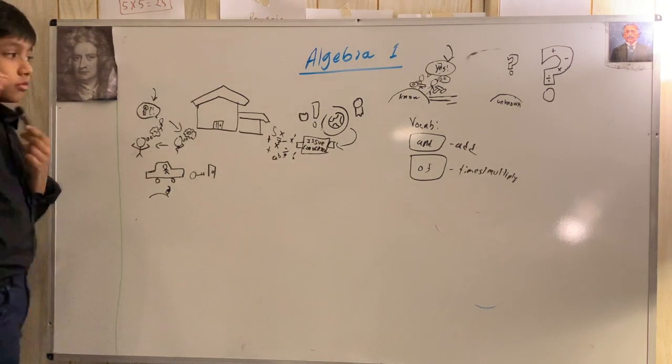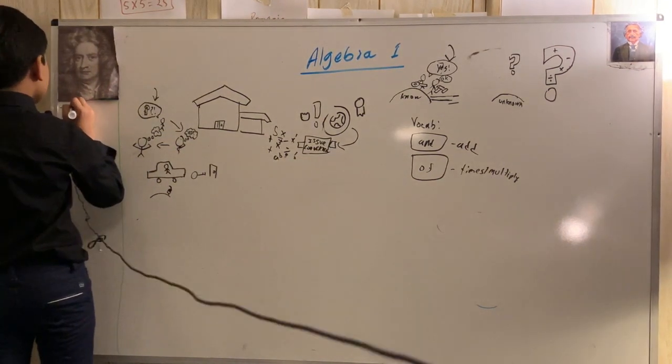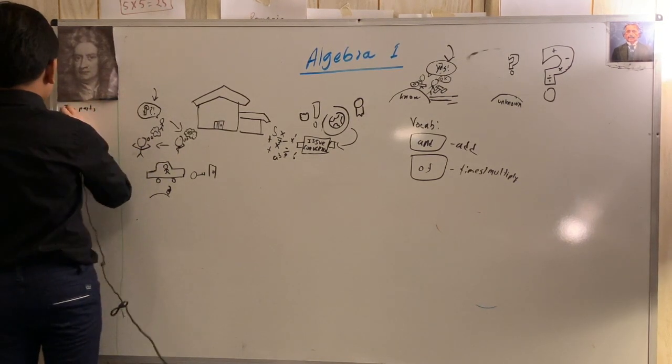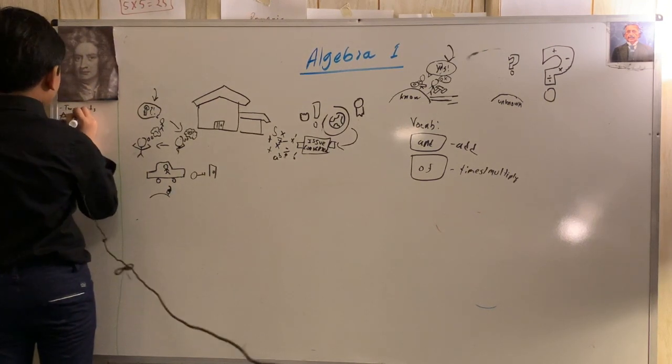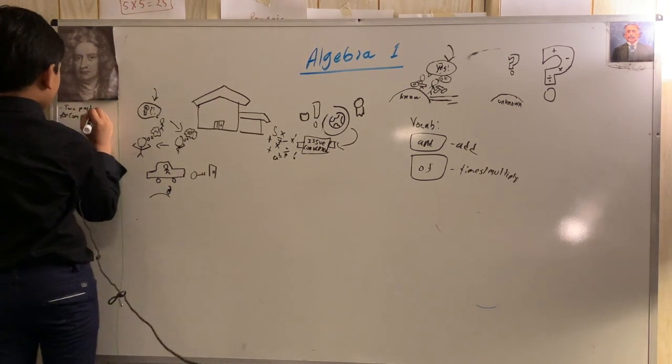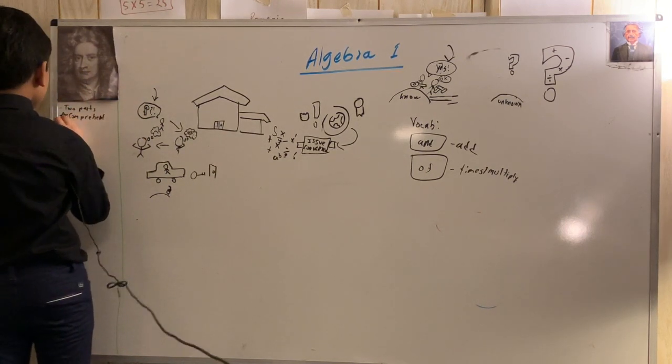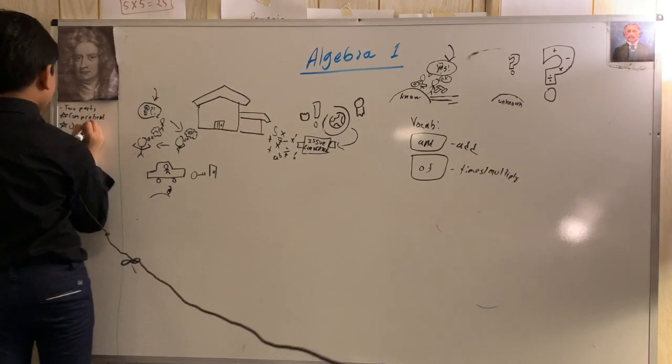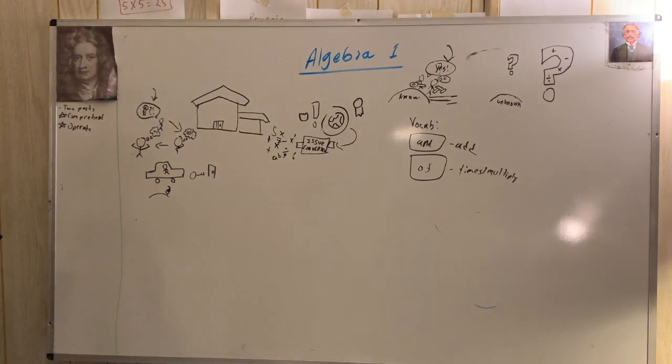We know that there are two parts to solving an algebraic problem. One, you have to comprehend the problem and the information it gives you. Two, you have to use the operations to your advantage, which I call operating.